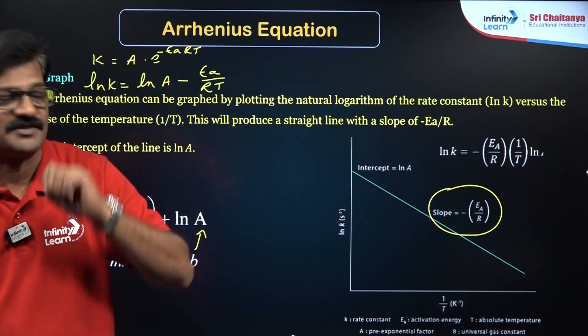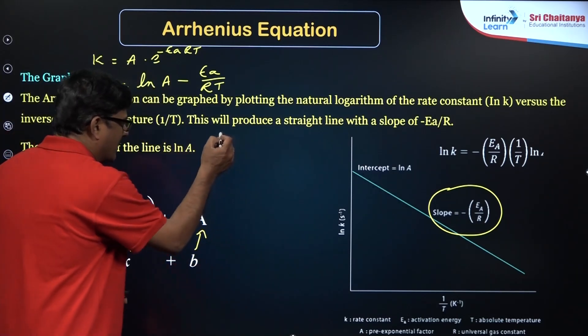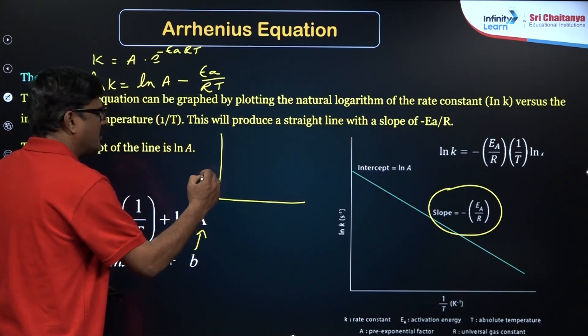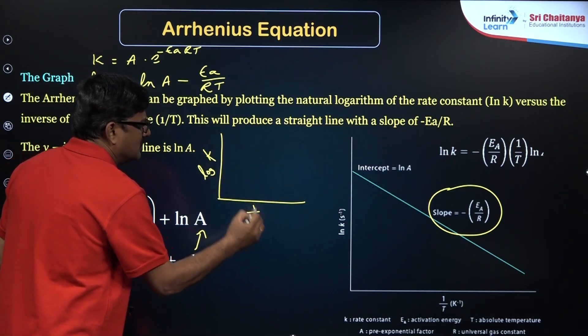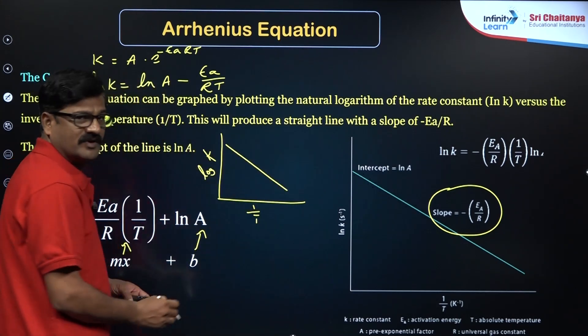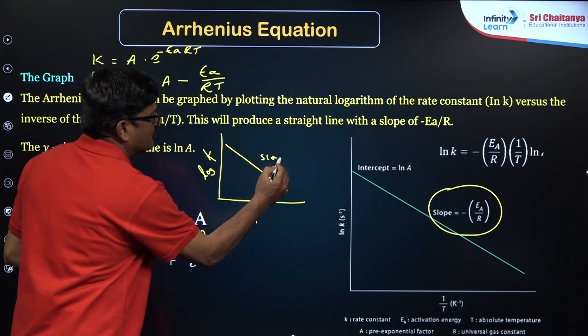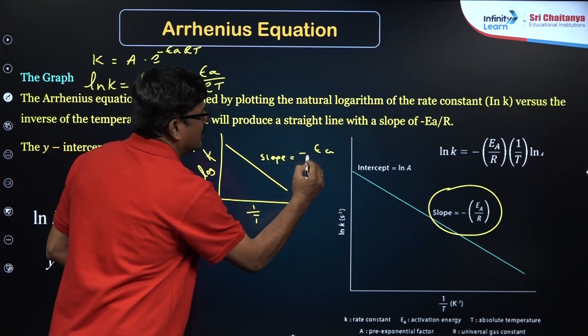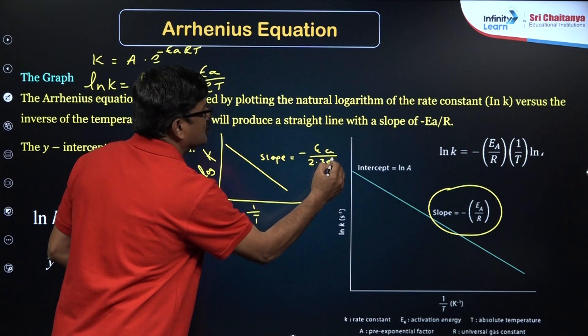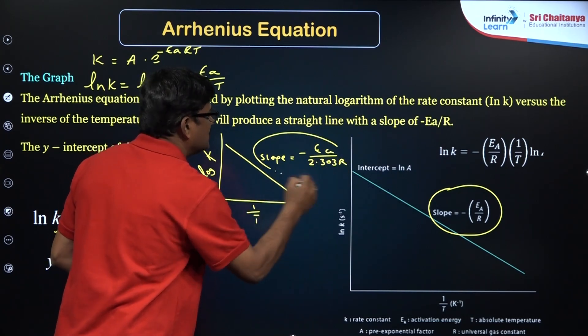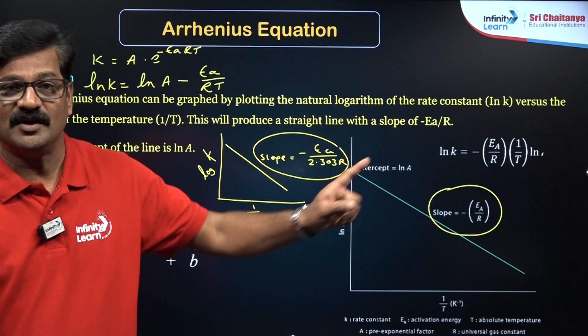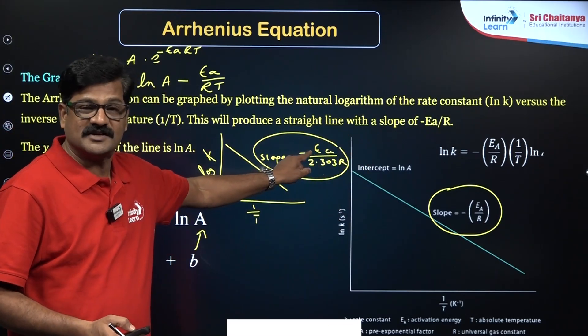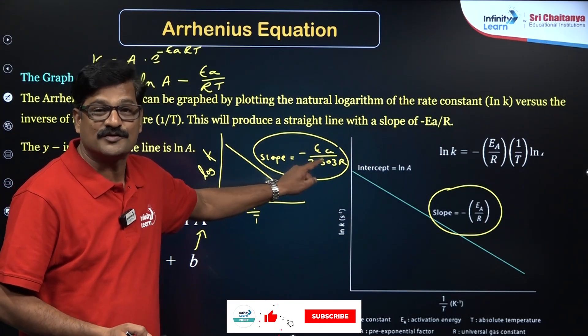This particular graph is very important. You are going to be given the slope and you will be asked to calculate activation energy. The same, if you are going to take log k versus 1/T, then also you are going to get a straight line and the slope is going to be -Ea/2.303R. From this slope expression you will be given a slope in the examination and you are asked to calculate activation energy. That is a more prone question for the NEET examination.